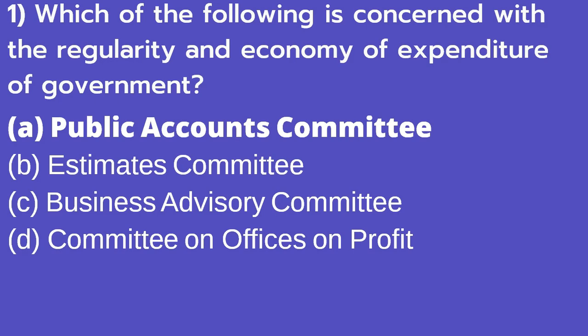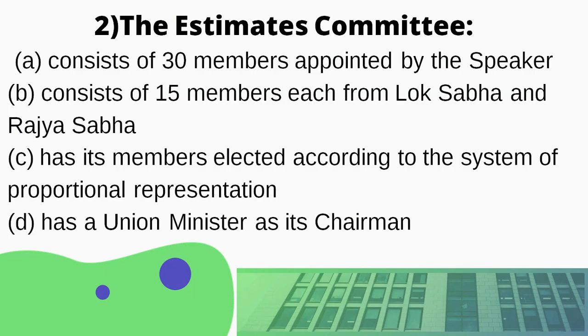The options are: PAC that means Public Accounts Committee, Estimates Committee, Business Advisory Committee, and Committee on Offices of Profit. In charo mein se konsa answer sahi hoga? The right answer is option number A, that means PAC — the Public Accounts Committee. Let's move on to the next question.